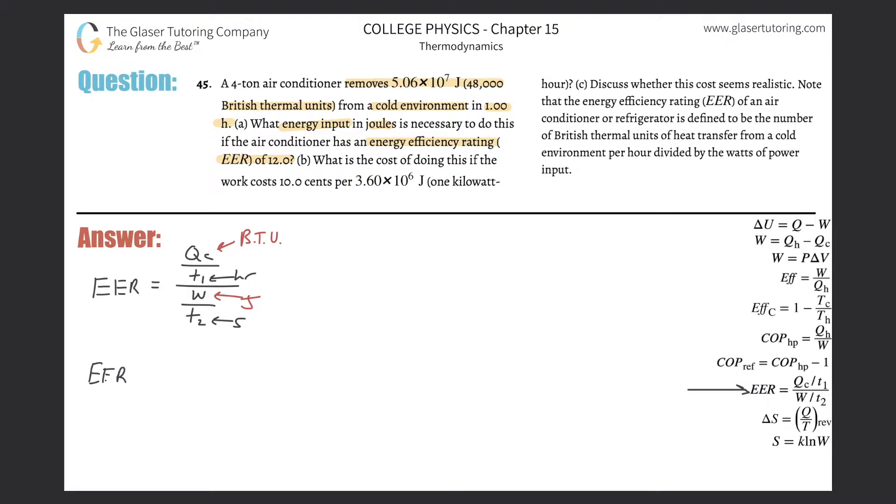So, EER, let's write it this way, is going to be equal to Q sub C all over T1, multiplied then by the reciprocal of the denominator. That's going to be T2 over work. Now, I can't really do much about this. This will always be in BTU, and this will always be in joules. You just got to remember that when you're dealing with energy efficiency rating.